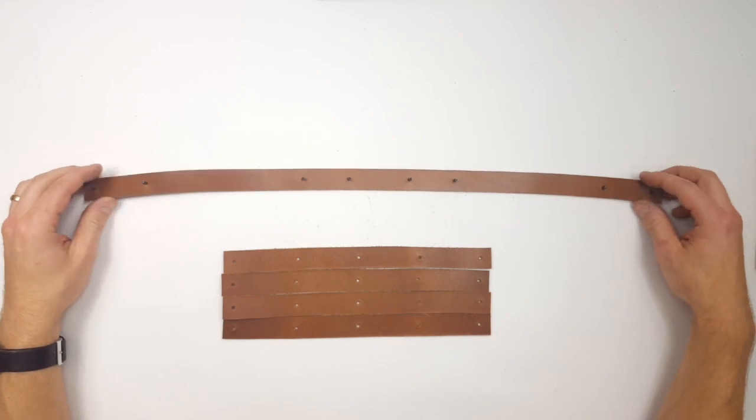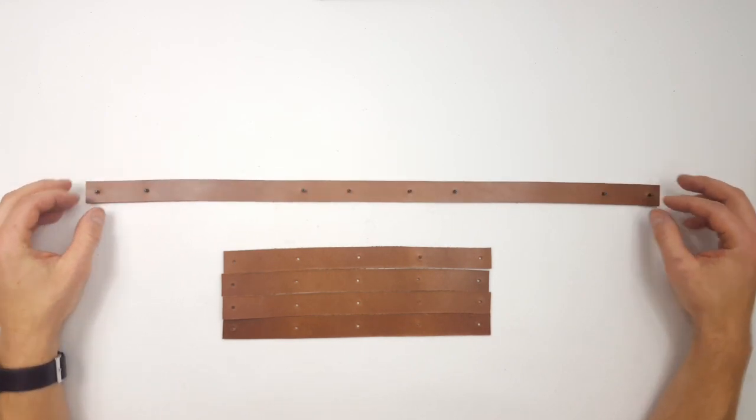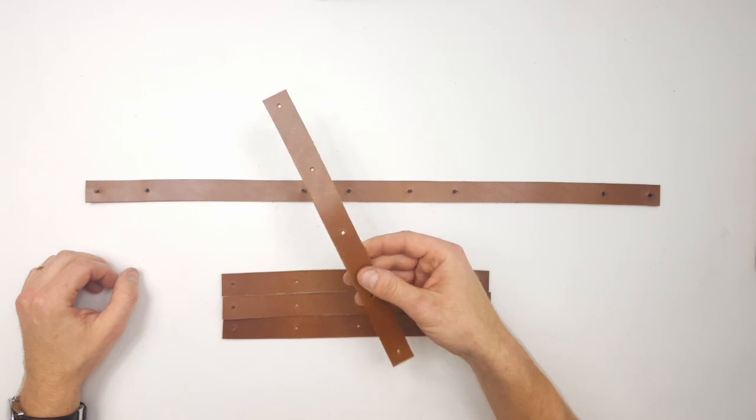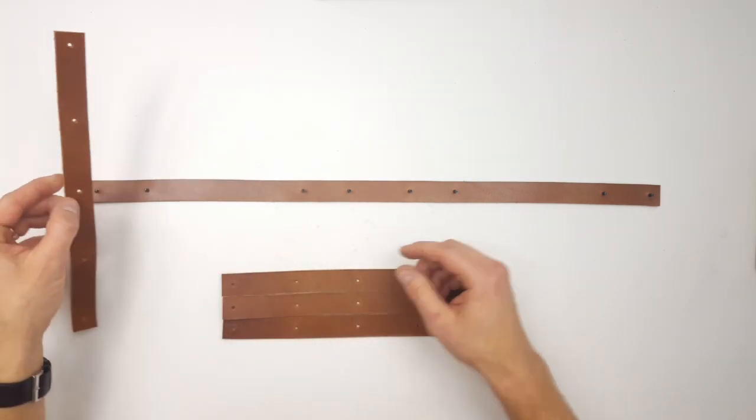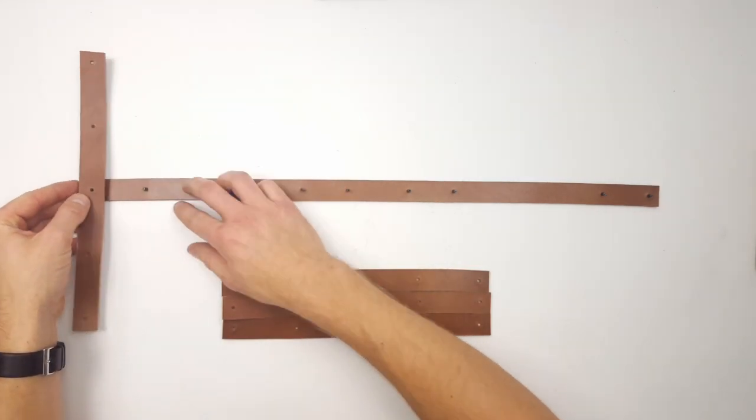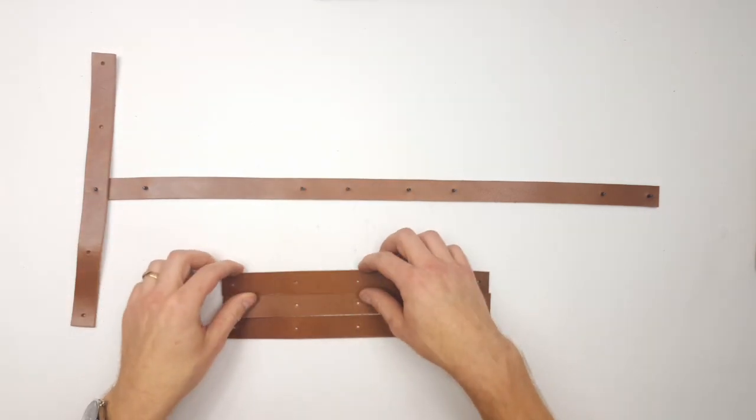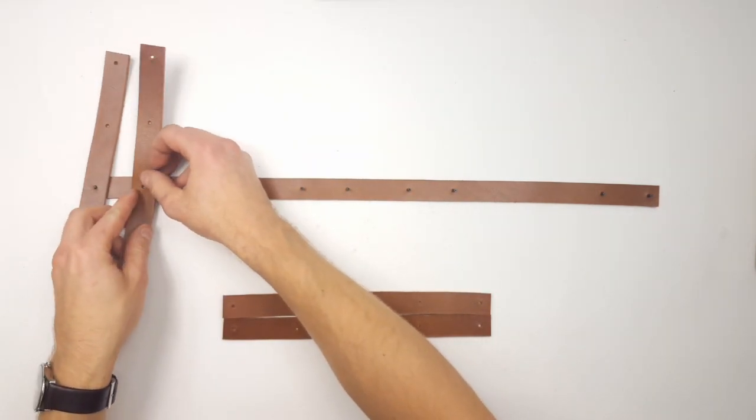Now that our rivets are put into the correct holes, we can just take the small straps and put them with the middle hole in on the short rivets on the sides, like this.